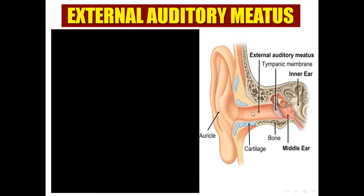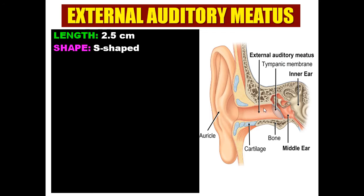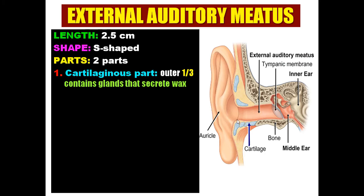The external auditory meatus is not straight — it is S-shaped. That's why, during examination of the tympanic membrane, you have to straighten the external auditory meatus by pulling the auricle upward and backward. The external auditory meatus is formed of two parts: the cartilaginous part and the bony part. The cartilaginous part is the outer one-third, and the skin of the cartilaginous part contains glands which secrete wax for self-cleaning of the ear. The inner two-thirds is the bony part.